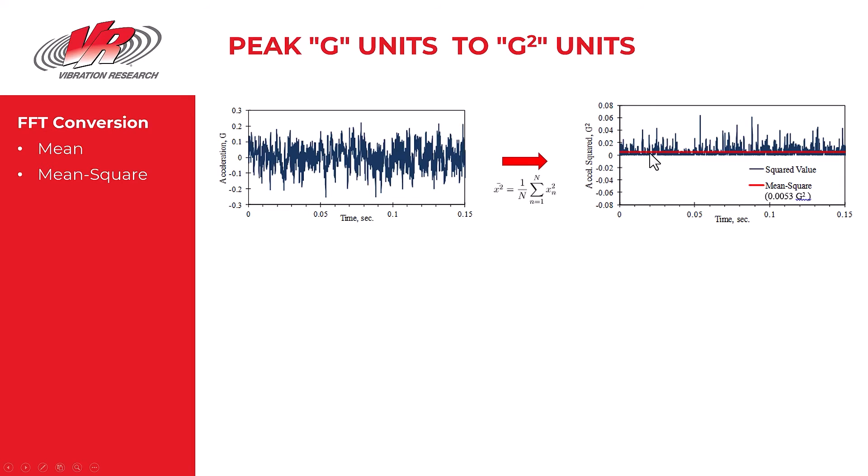So we have that pictured here in all these blue lines representing the peak accelerations now squared. Then the test engineer averages these squared values to obtain the mean squared value. A signal's mean square value measures its average strength or power.